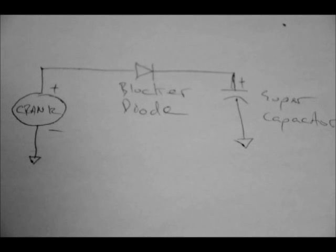So all you really need are three components: a DC crank which is essentially just a motor, a blocker diode such as 1N4001, you'd want to use a power diode, 1N4001, 1N4004, and a supercapacitor.